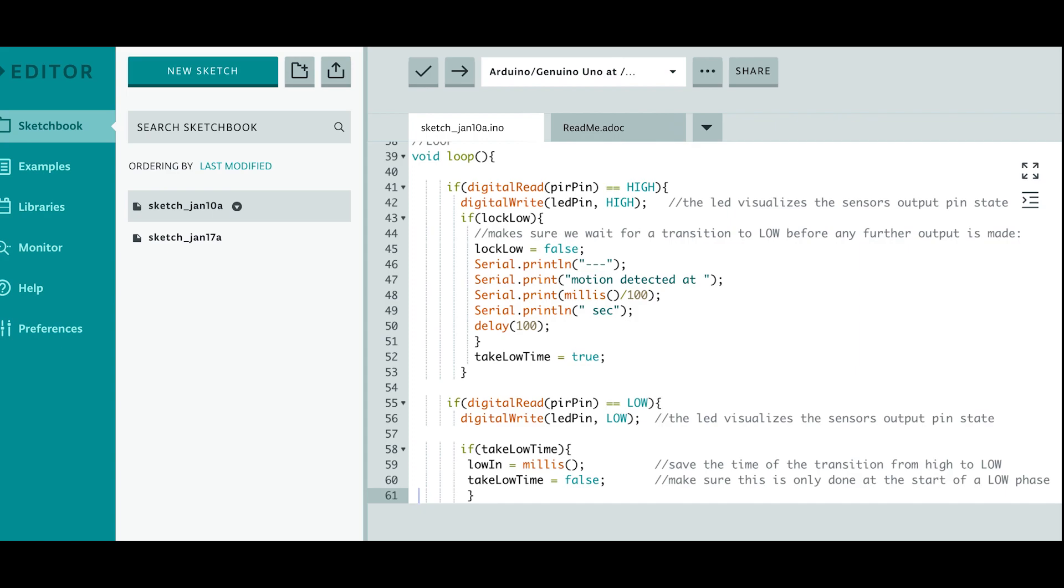This program is available in the comment section also on our website edtechnology or you can take up any program which is available through the net. As you can see I am right now using the web editor. You can use the local installation of the Arduino software. You can run the program and once this program is run the motion is sensed and this is how it will look like.